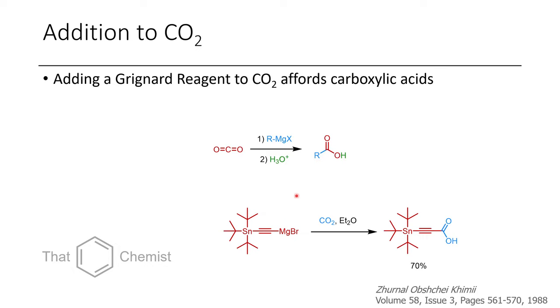And so one example that I found in the literature was taking this alkynyl tin species, treating it with CO2, and through subsequent hydrolysis, they're afforded with this tin-containing, alkyne-containing carboxylic acid. Although I wasn't able to find the DOI for this, because it's from an older issue of a Russian journal of general chemistry.